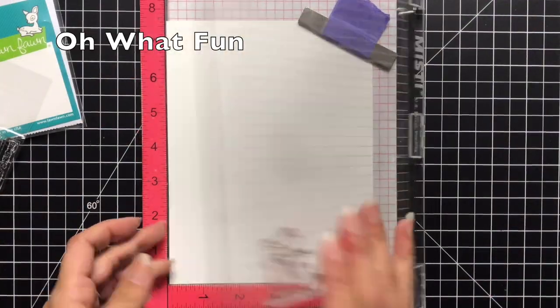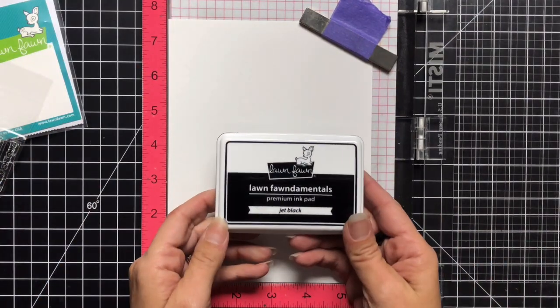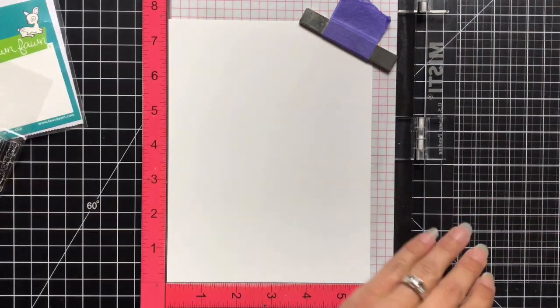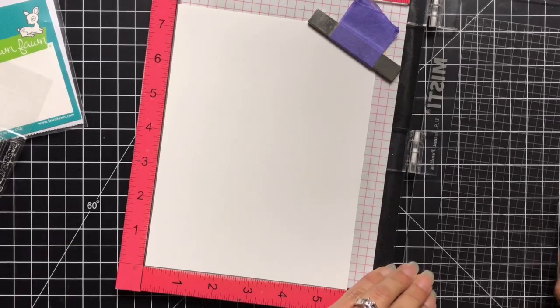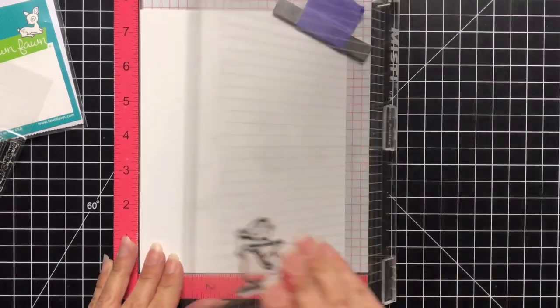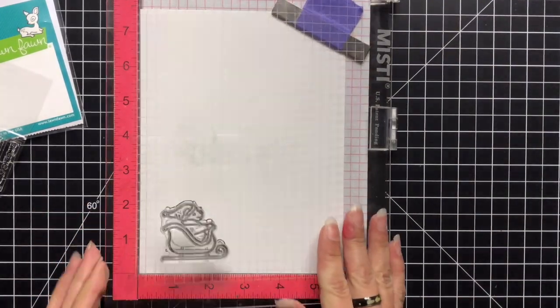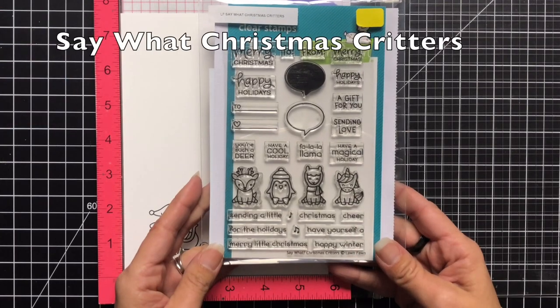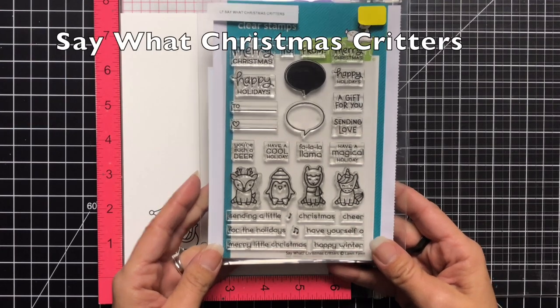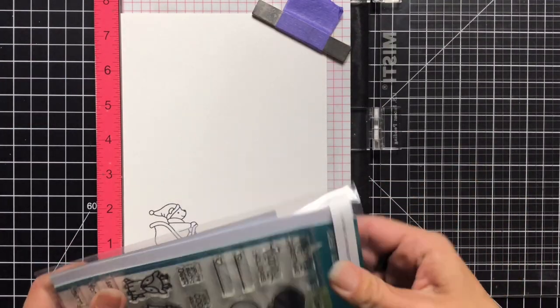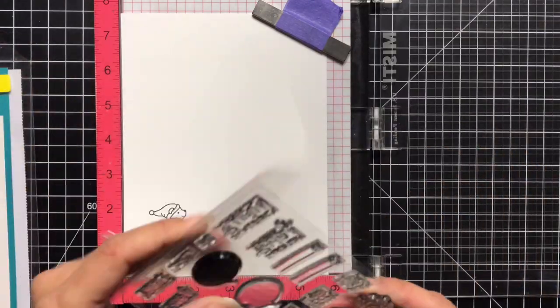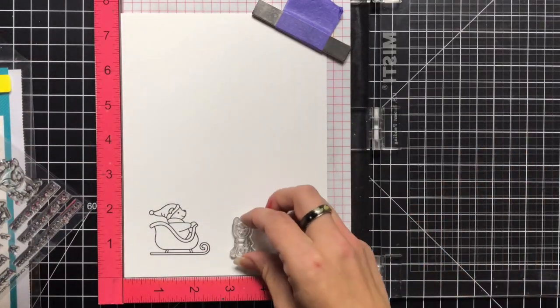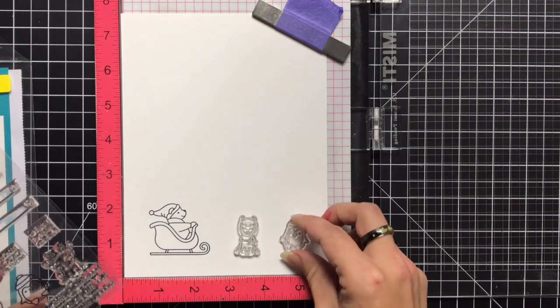So I am using the Lawn Fawn white cardstock and the Jet Black ink to stamp all of my images. I'm using the Oh What Fun stamp set with that cute little bear in the sleigh and he needed some friends. So I'm using Say What Christmas Critters. These were the perfect size to go in my scene. I didn't want them to be too big since my sleigh is kind of the focal image.